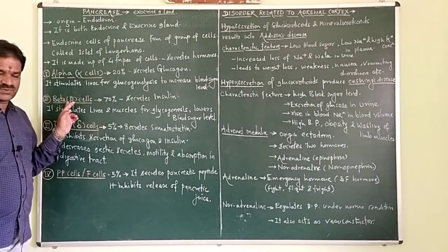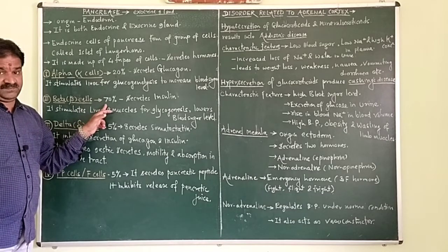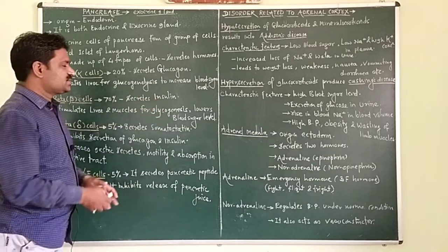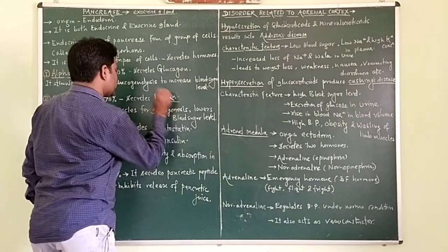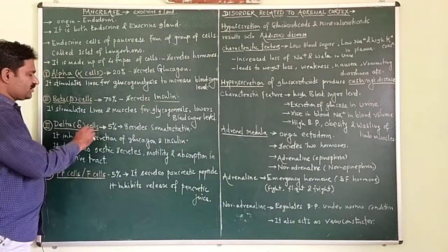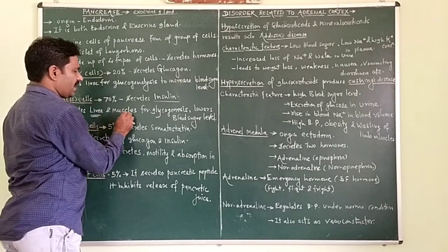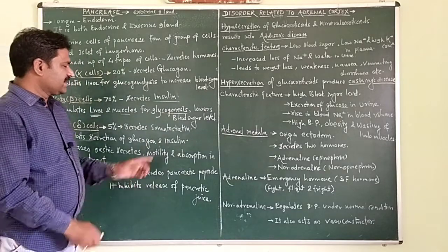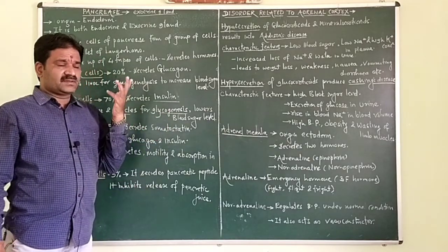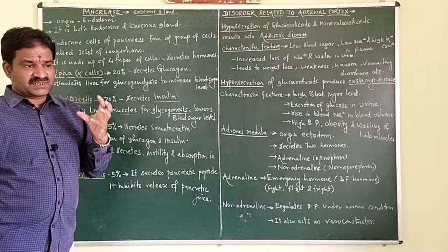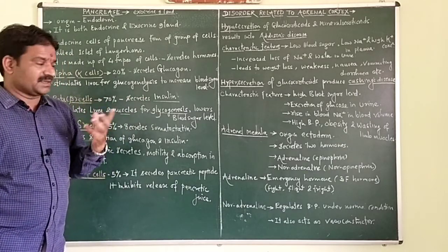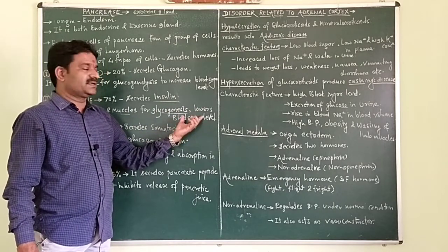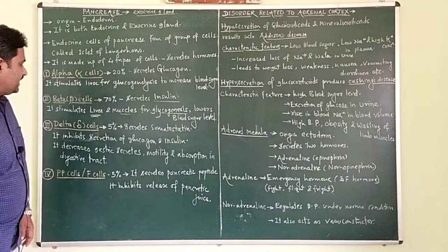Beta cells constitute 70% of the Islets of Langerhans and secrete the hormone insulin. Insulin stimulates the liver and muscles for glycogenesis — the process in which glycogen is produced from simple glucose. This lowers the blood sugar level.